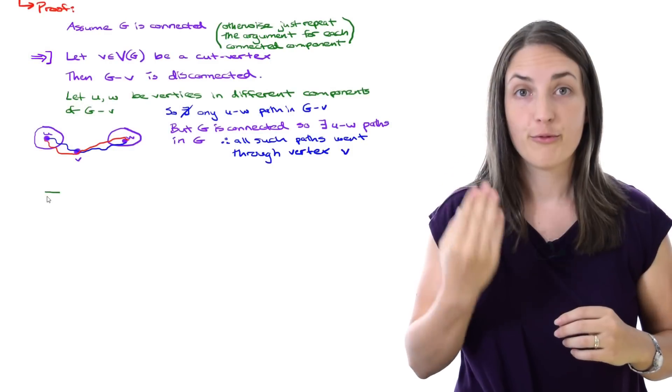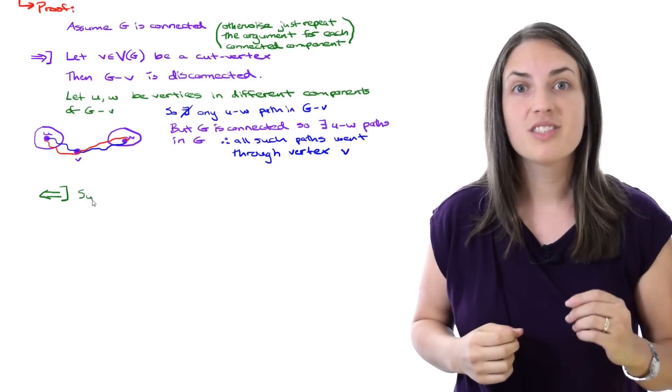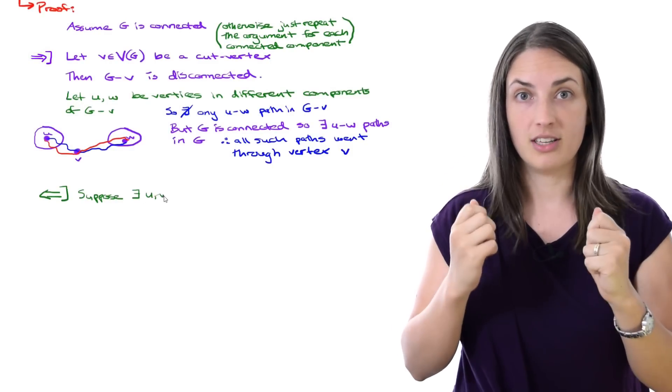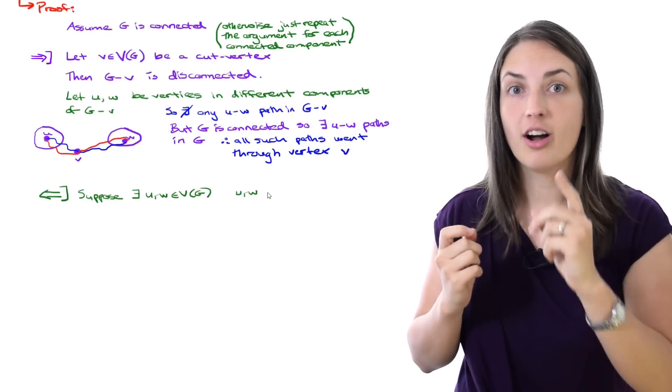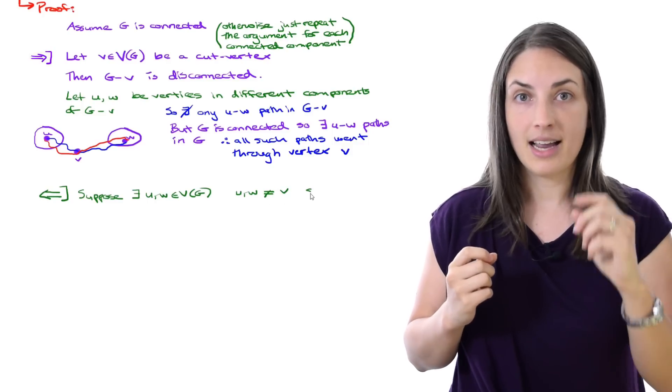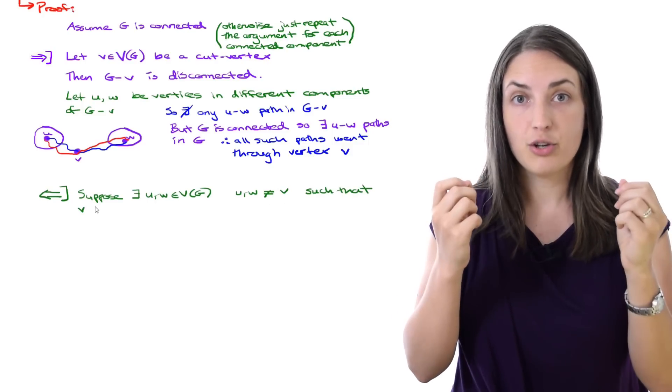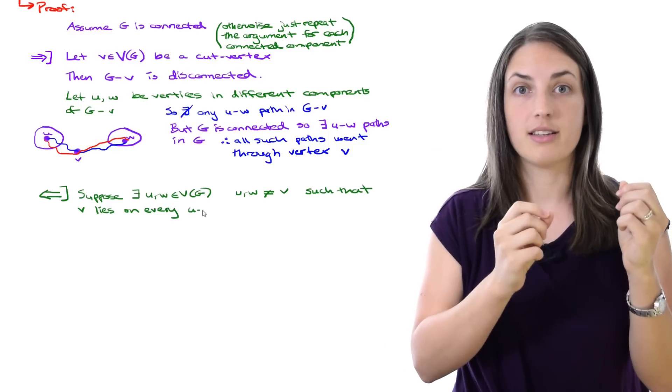That's the first direction of the proof, so now let's think about the other direction. For the other direction, suppose that there exist two vertices U and W which are not equal to our vertex V, and we know that every U, W path has V on it somewhere.